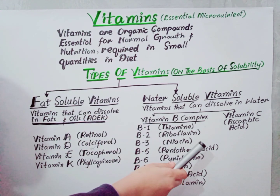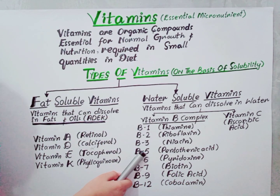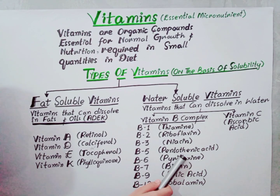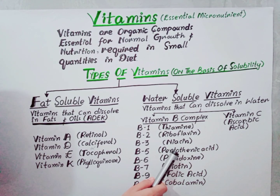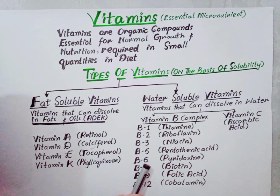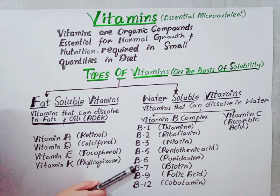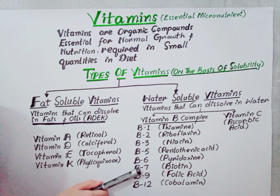Pantothenic acid, or vitamin B5, is required in the formation of coenzyme A. Vitamin B6, pyridoxin, is involved in blood cell formation. Vitamin B7 also functions as a coenzyme and is required for the function of five carboxylases.